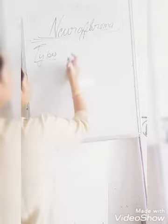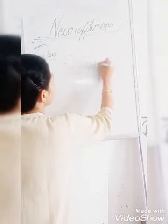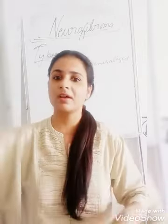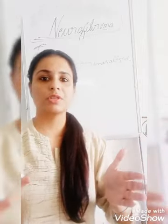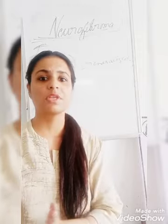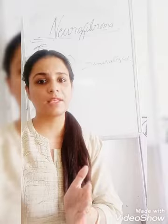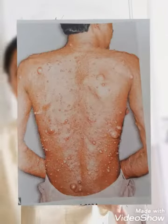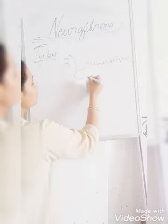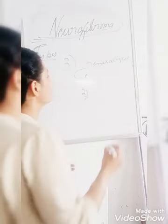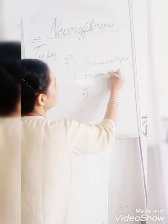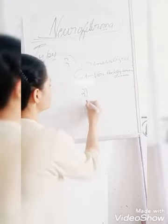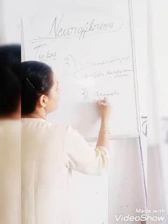The third variety is generalized neurofibroma. In generalized neurofibroma, tumors can occur anywhere in the distribution of cranial nerves, spinal nerves, or peripheral nerves — throughout the whole body. So there will be multiple tumors in the body. This is further categorized into two types: the first is called von Recklinghausen disease, and the second is called acoustic neurofibromatosis.